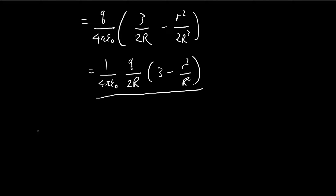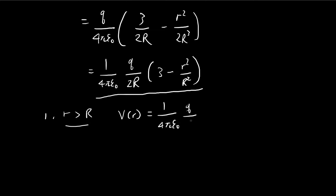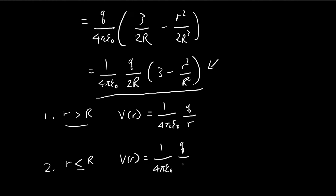So there we have it. To conclude, we've found the potential for both cases. When outside the sphere, the potential equals q over 4π epsilon times 1 over r. When r is inside the sphere, we have the expression with the factor of 3 minus r squared over R squared. The interesting thing to do now is to graph what this potential looks like.